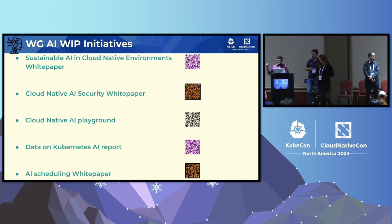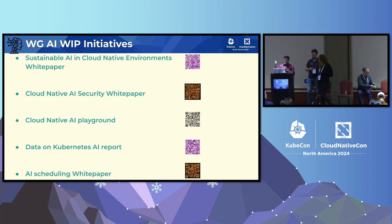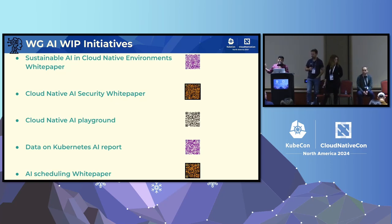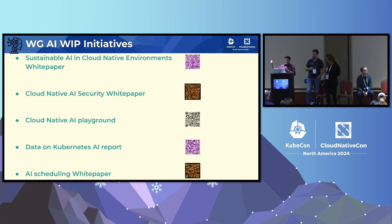Some other initiatives include a sustainable AI and cloud-native environments white paper that folks are working on — if you're interested in the intersection of sustainability and AI workloads, this is an area where you can collaborate. There's also another white paper coming up on cloud-native AI security. Additionally, the Data on Kubernetes group released a report this week that has a specific mention of this working group and cloud-native AI workloads.